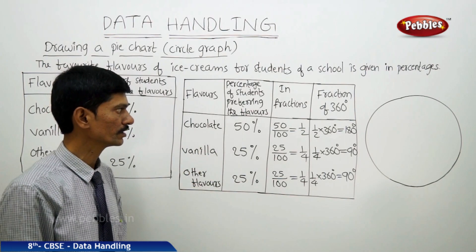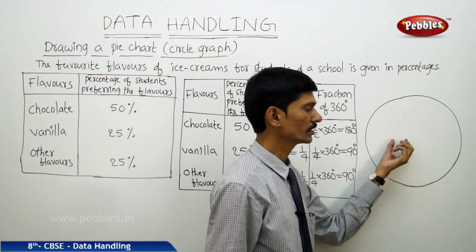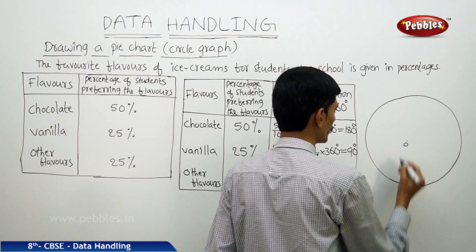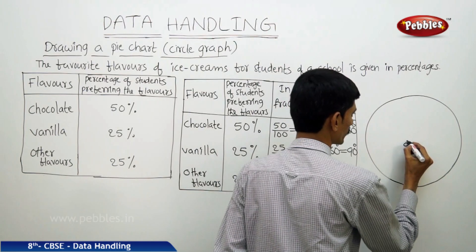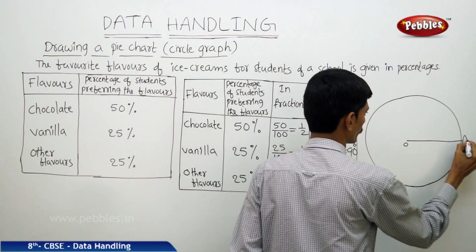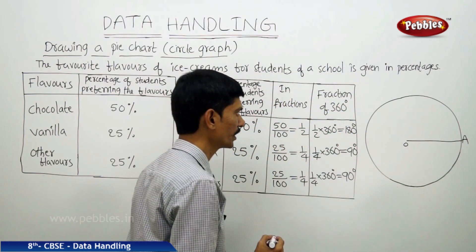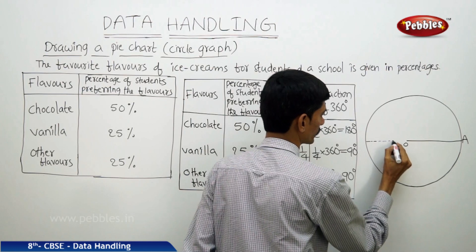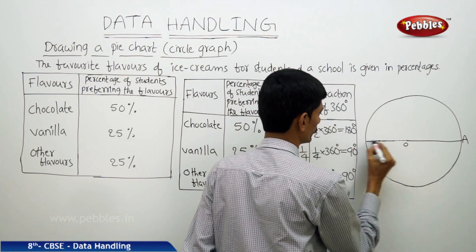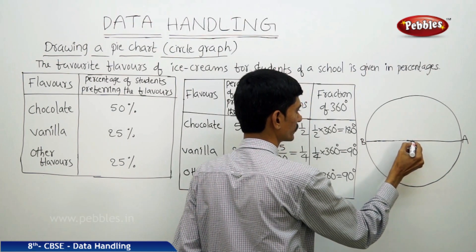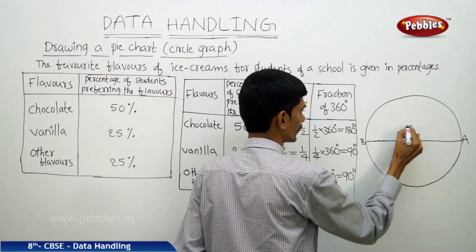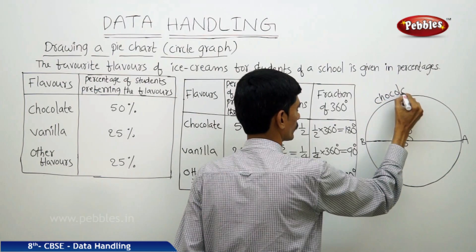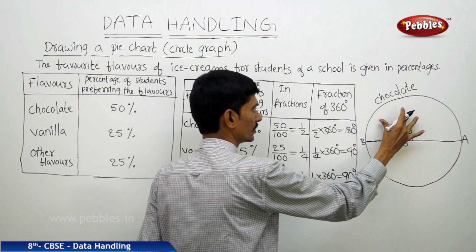Now let us draw these three sectors in a circle. First, draw a circle with center O and any convenient radius, then draw a radius OA. Draw angle AOB as 180 degrees, which is a straight angle — this sector represents chocolate, and it is exactly half the circle, a semicircle.